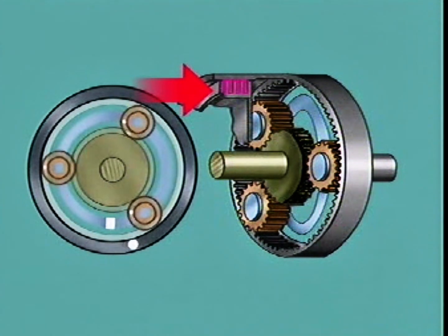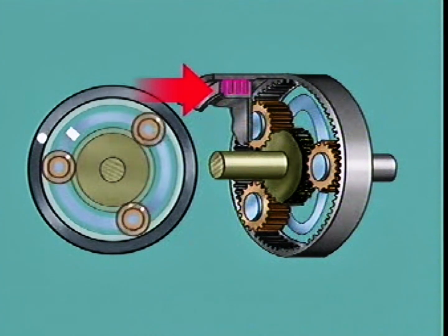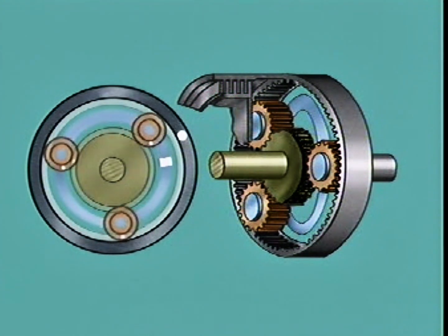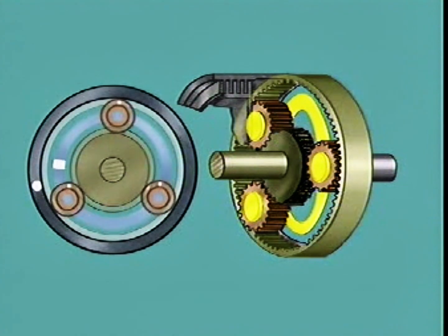When fluid under pressure is directed onto the clutch piston, the clutch plates are locked together. This locks the planet carrier to the ring gear.